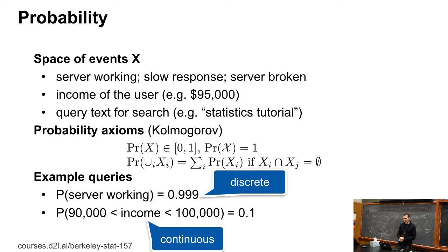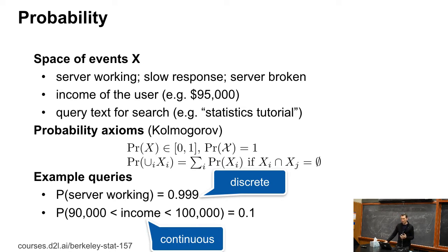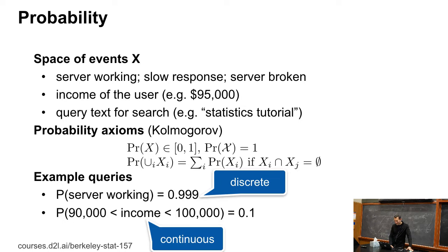The probability of a server working might be 99.9%. But asking what's the probability of my income being exactly $91,000.05 — well, that probability is essentially negligible. But asking whether my salary is between $90,000 and $100,000 is a more reasonable question. Let's say the probability might be 10%. Amazon pays better than that, but it's for illustration purposes.